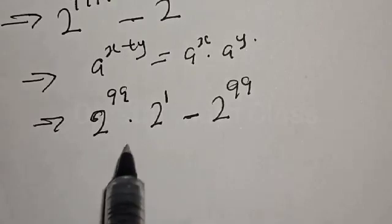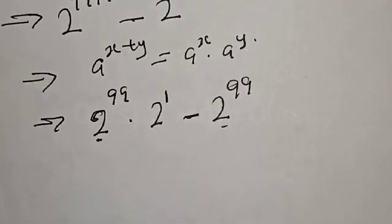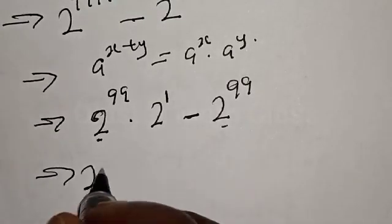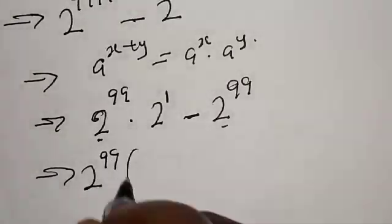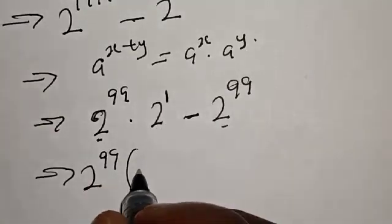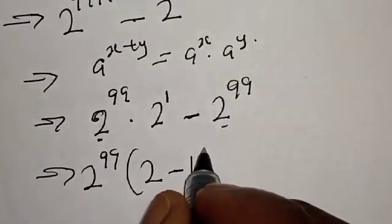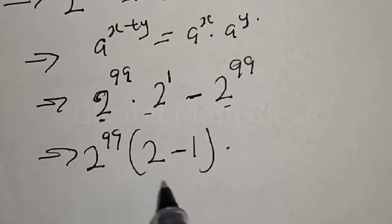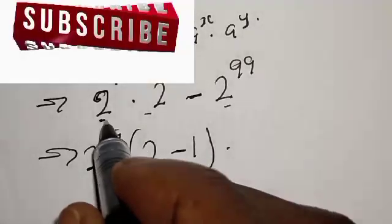From here we have 2 raised to power 99 in both terms, so let's factor it out. This implies that we have 2 raised to power 99 multiplied by the quantity 2 raised to power 1 minus 1, which is the same as 2 raised to power 99 times the quantity 2 minus 1.